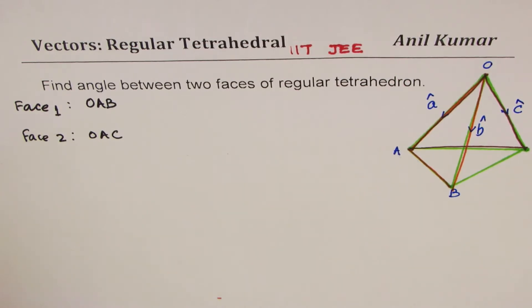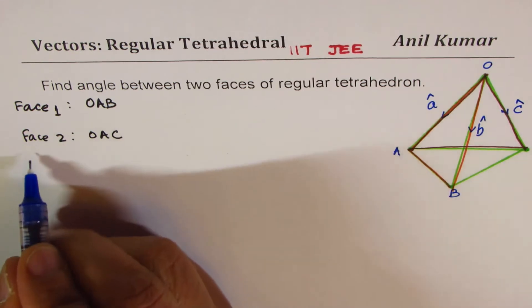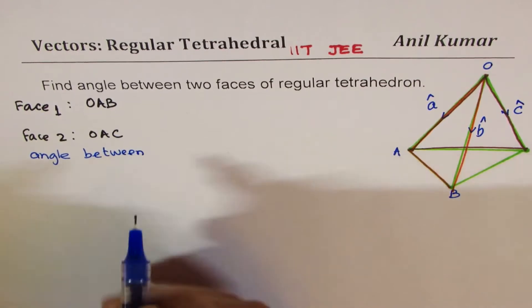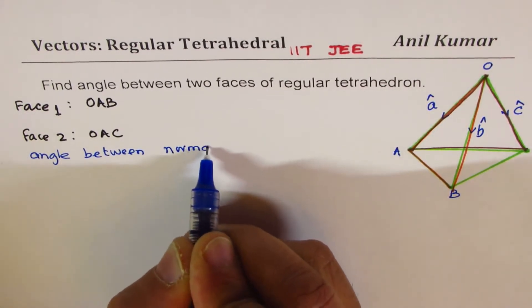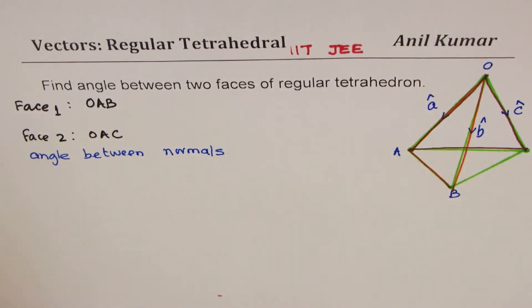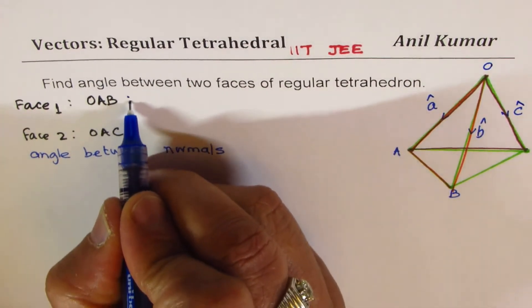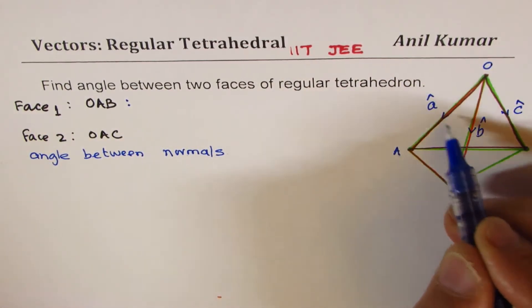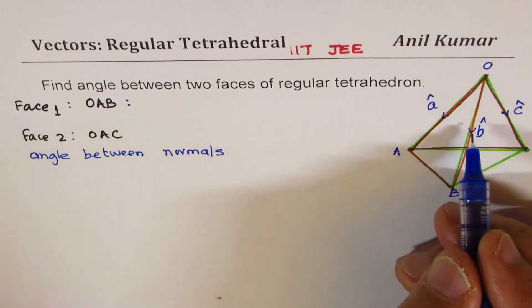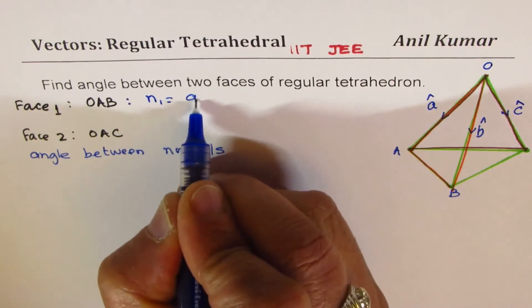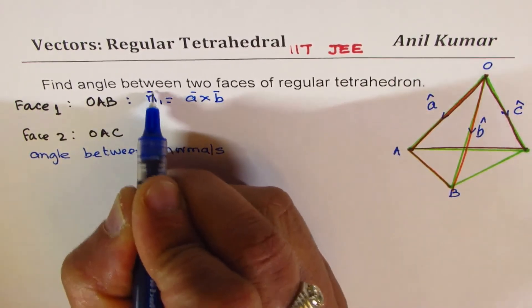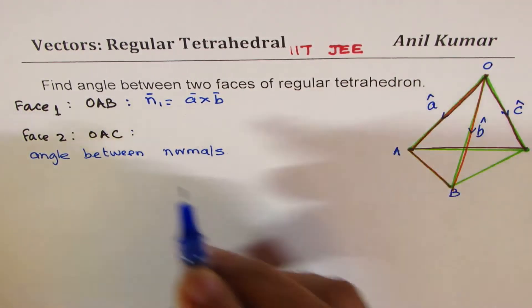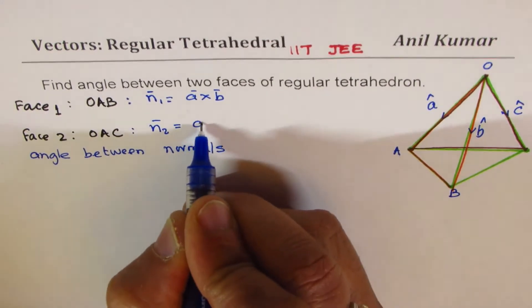Now finding angle between faces is same as angle between normals. So we'll find angle between normals. So how do we find normals for these faces? For face 1 the vectors which define this are A and B, their cross product will result in their normal. So the normal for the first one is A×B. The normal for the second face will be A×C.